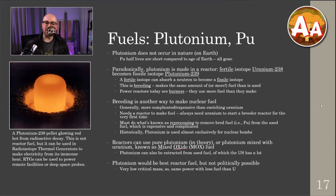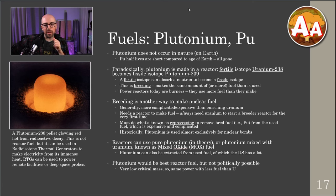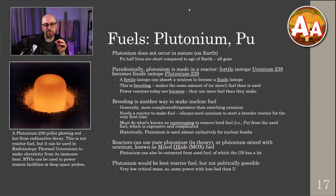Breeding is another way to make nuclear fuel, though it's generally more complicated and expensive than enriching uranium — at least nowadays with centrifuges. Back in the Manhattan Project, some of those enrichment facilities were enormous buildings and enrichment took about 10% of the United States' electrical grid production to accomplish.